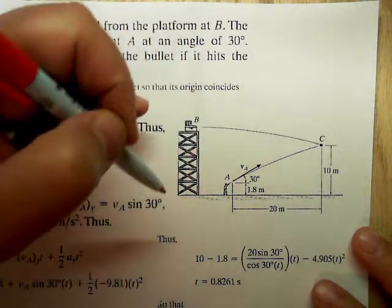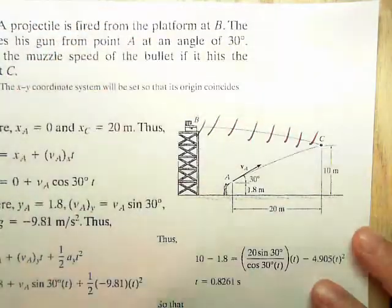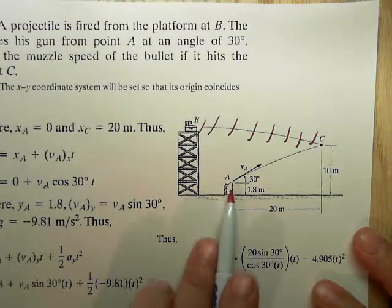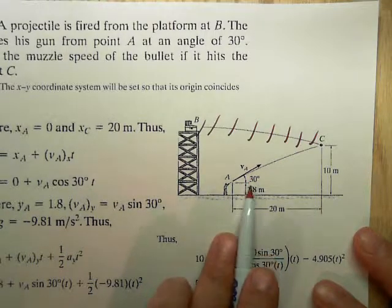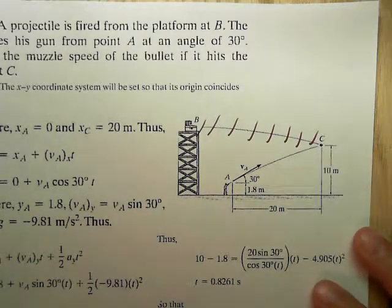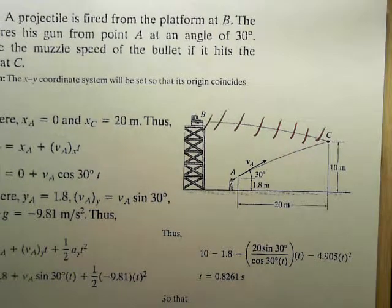So really the projectile is almost irrelevant. The question has become: how fast must the bullet be going such that when we fire it at an angle of 30 degrees it will pass through that point? So it's actually a sort of deceptively simple problem.